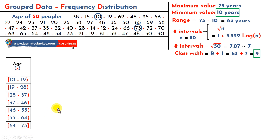Remember: when an interval has a bracket, it means that value is included. When it has a parenthesis, it's open, meaning that value is not included.